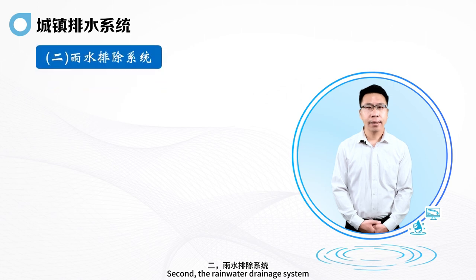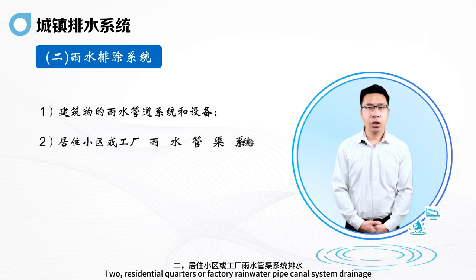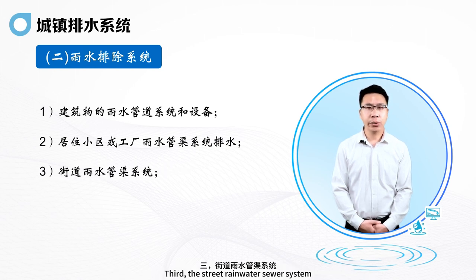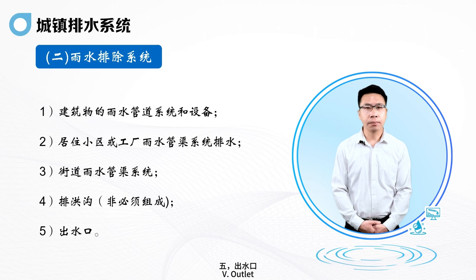Second, the rainwater drainage system, also made up of five parts: the rainwater plumbing system and equipment of the structure; the residential quarters or factory rainwater pipe canal system; the street rainwater sewer system; flood drainage ditches; and the outlet.